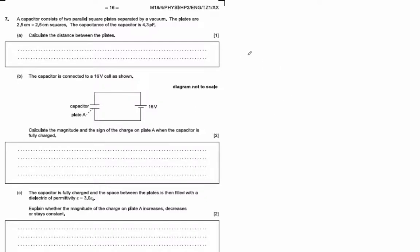Calculate the distance between the plates. You're going to use capacitance equals epsilon naught times area over d. It is epsilon naught because they say it's a vacuum.